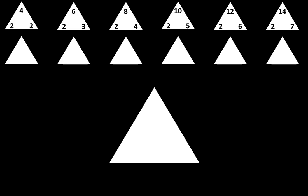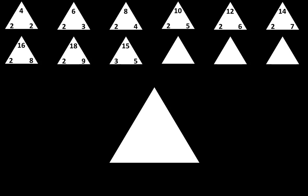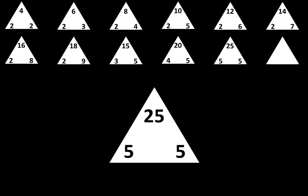Let's move to the next row. The next one is 2 times 8 is equal to 16. The next one is 2 times 9 is equal to 18. The next one is 3 times 5 is equal to 15. The next one is 4 times 5 is equal to 20. The next one is 5 times 5 is equal to 25. The next one is 6 times 5 is equal to 30.